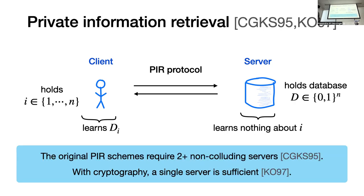The very first PIR schemes were given in the setting where a client communicates with two non-colluding servers that each hold replicas of the database. However, Kushilevitz and Ostrowski showed that from cryptographic assumptions, we can actually build PIR schemes where a client communicates with just one server. And this is going to be the setting that we're interested in in this talk.